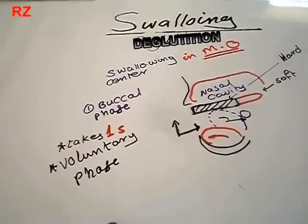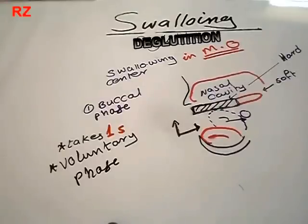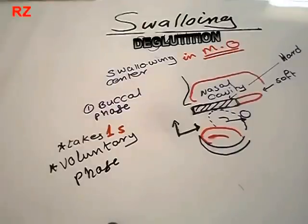What is swallowing or deglutition? It is a reflex integrated in our brain, in the medulla oblongata, in a center called the swallowing center or deglutition center. To be specific, it is located in the nucleus of tractus solitarius and nucleus ambiguus.